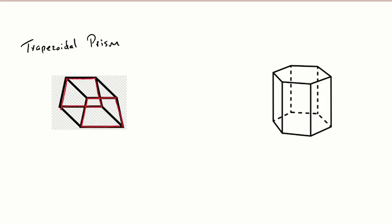We have two formulas, which will be the same for all prisms. We have our lateral area, which is just perimeter times height of the prism — the height being the distance from one base to the opposite base. Then we have our total surface area formula, which is lateral area plus two times the area of the base.